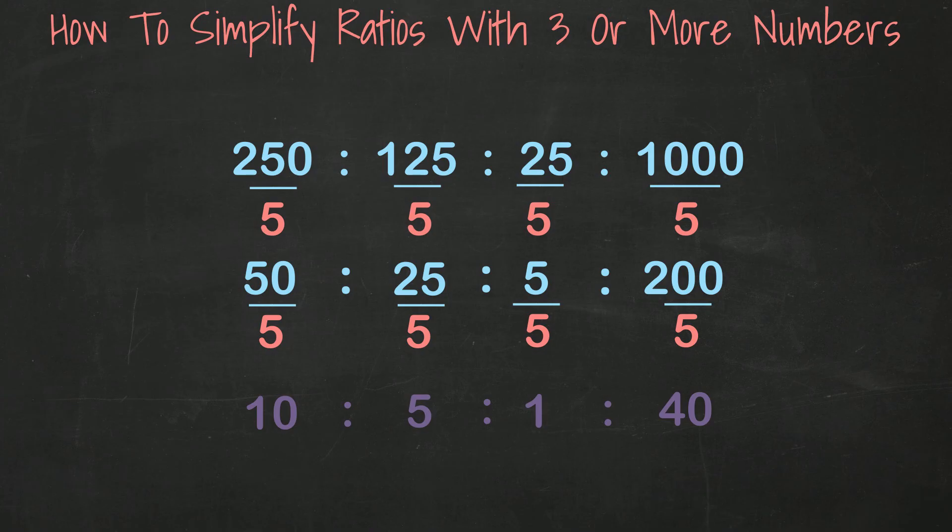If you were asked the question, what was the greatest common factor in this example, you can look at it this way. We divided by 5 and then divided by 5 a second time. 5 times 5 is 25, and 25 should be the greatest common factor.